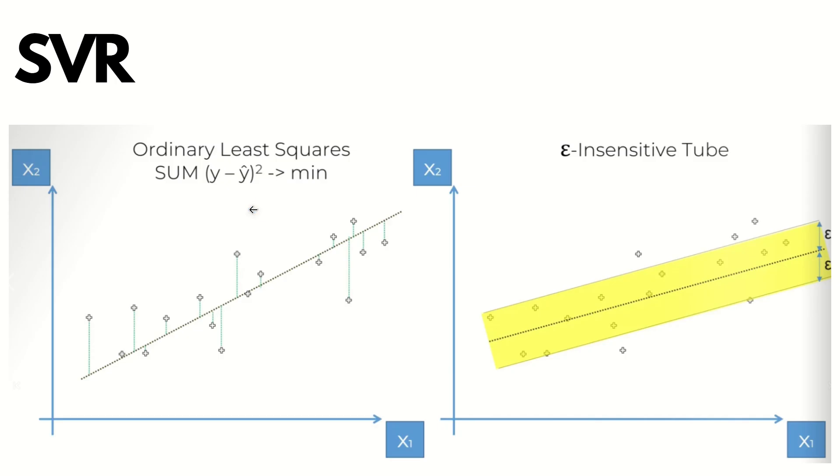This is y actual value, this is y cap on the trend line. So basically, we take the difference, square it, and we want to minimize it. This is the ordinary least squares method. Essentially, what we are doing is minimizing the error. We want to have a line with the minimal error possible. That's the intuition behind simple linear regression.